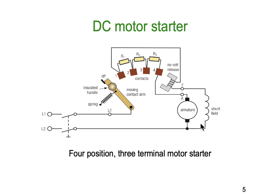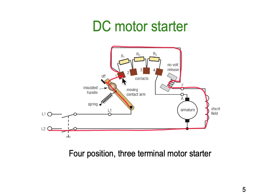So how can we go about doing that? This is a four-position, three-terminal DC motor starter. You have a lever arm connecting the supply to the armature. When we move the arm across, current goes through the release catch into the shunt field and back to the supply. We also have current feeding to the armature, but it has to loop through all three of those resistors.